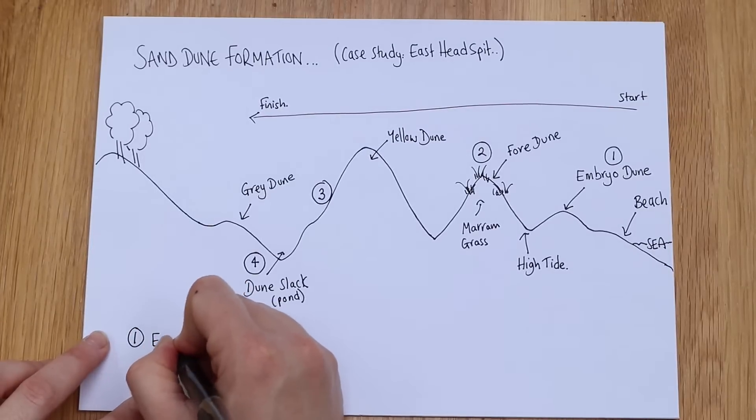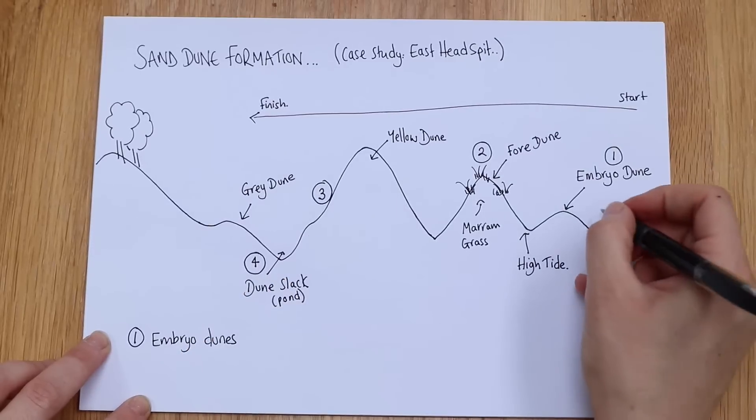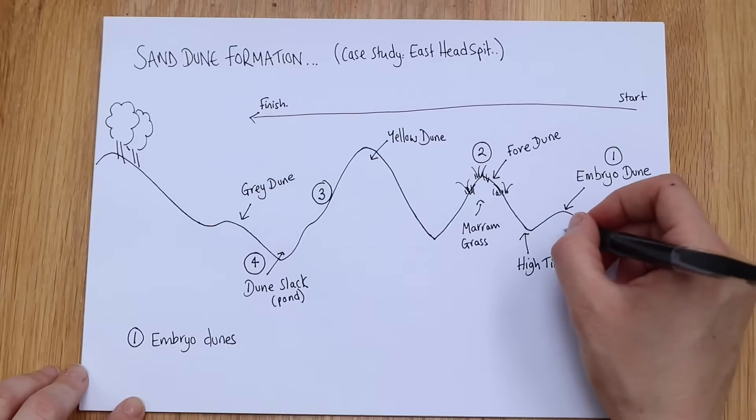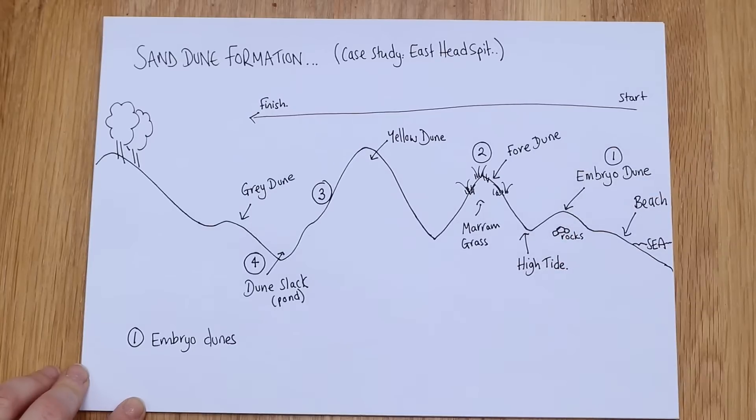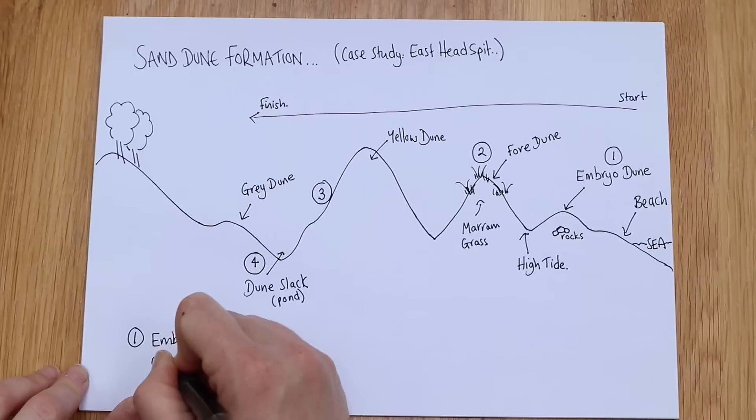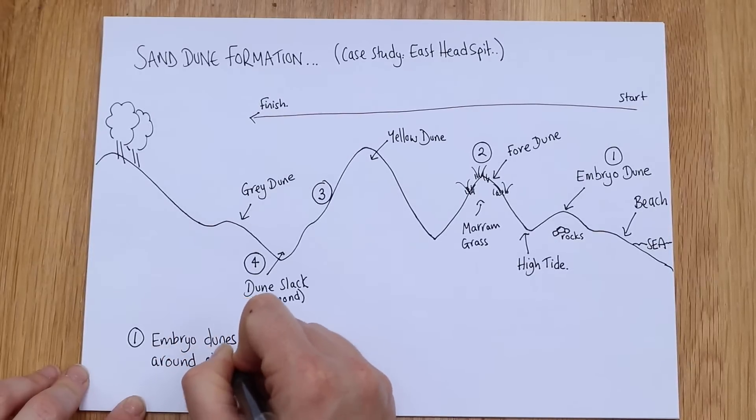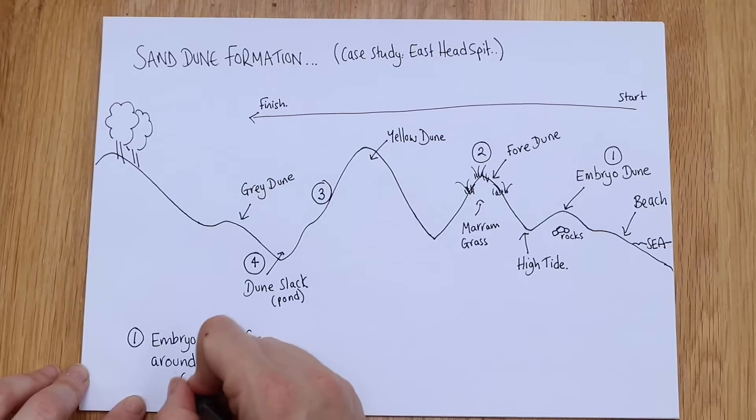Let's label those up. So number one, that is embryo dunes. They form around obstacles, so they can't exactly form on the end. They need small rocks, so perhaps I'll just draw a rock there. They need rocks in order to build up the sand. They need to catch on something. It can even be seaweed, logs, that kind of thing, some wood on the beach, but they need to form around obstacles, e.g. rocks.